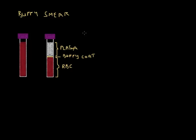If you look at this, the plasma does not contain any cells. The red blood cell layer contains mainly red blood cells, and the buffy coat contains two types of cells: mainly white blood cells and blood platelets.